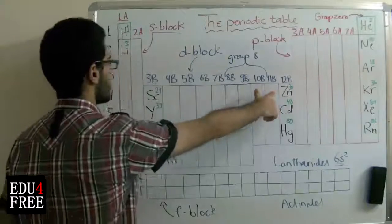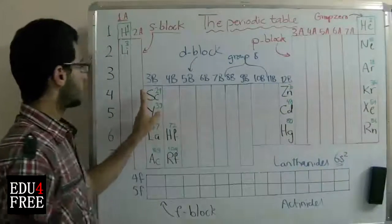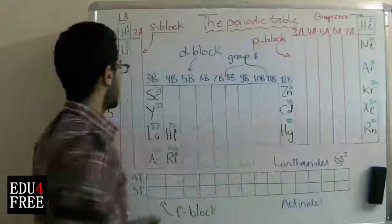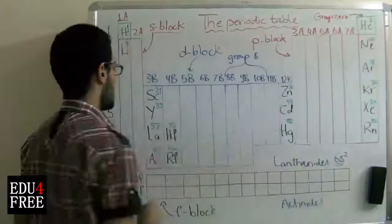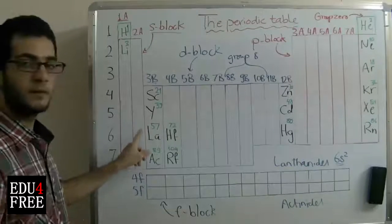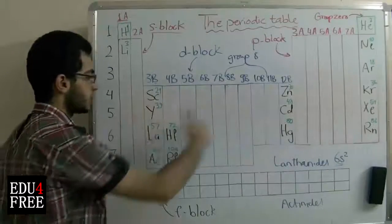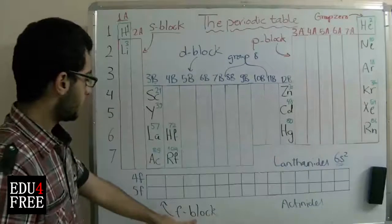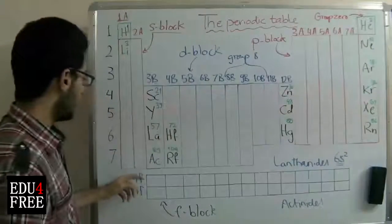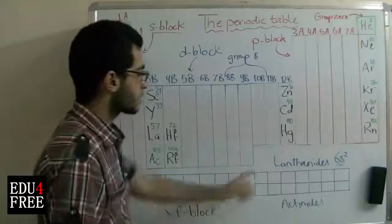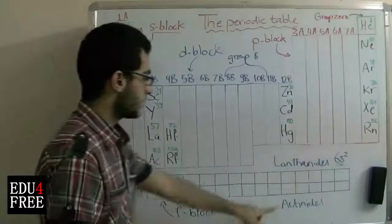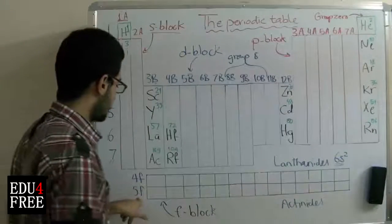The D block consists of three parts. The first transition series is where the 3D sublevel is filled successively as we go from left to right. The F block, which is found between lanthanum and hafnium, and between actinium and rutherfordium, consists of the 4F and 5F sublevels. We have 14 elements each in a separate row: the first group is called the lanthanides, in which the 4F sublevel is filled successfully, and the second group is called the actinides, in which the 5F sublevel is filled successfully.